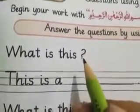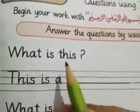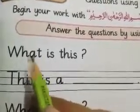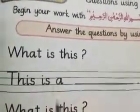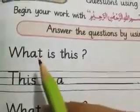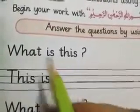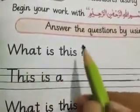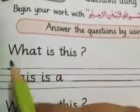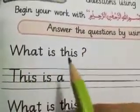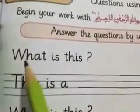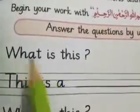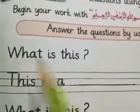We can understand they were asking something when there is a question mark. Woh humse kuch pooch rahe hain. Jab koi sentence hoga aur uske aage question mark laga hoga, it means this is a question. So, what is this? They were asking: what is this?